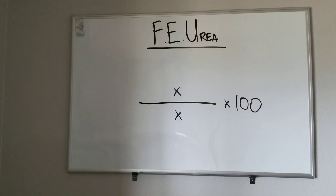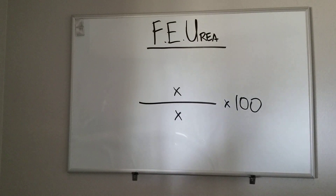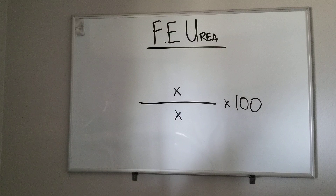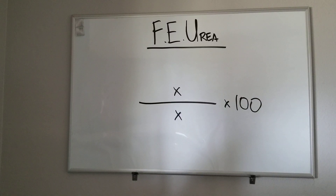Med School Made Easy. This video is going to go over the fractional excretion of urea. We'll heavily reference our FENa video. As mentioned in that video, the reason why we would calculate a fractional excretion of urea is if the patient's on diuretics or other conditions that make FENa less accurate.